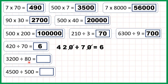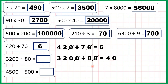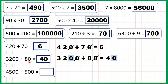Now 3,200 divided by 80 — again we have an end zero in the divisor, so we can cancel that with the end zeros in the dividend. That leaves us with 320 divided by 8, which is 40, because 4 times 8 is 32, but if we have an end zero in the dividend we need an end zero in the quotient. So our answer is 40. When we cancelled the zeros, we had 320 divided by 8, and that gives us the same answer as 3,200 divided by 80.